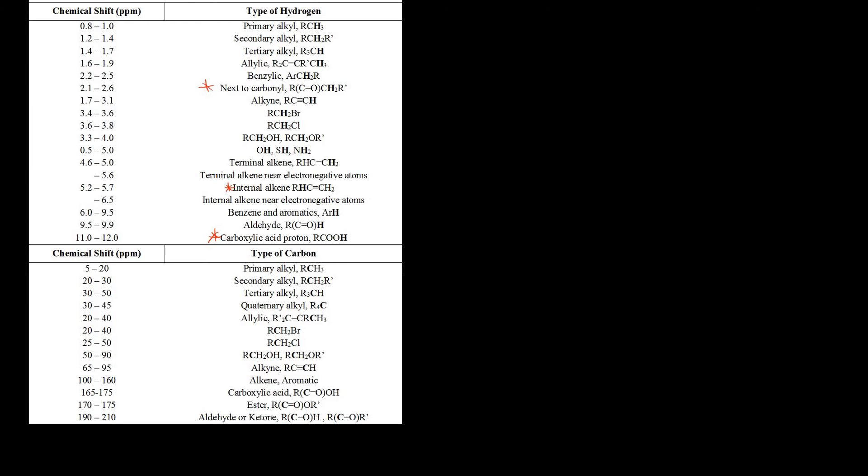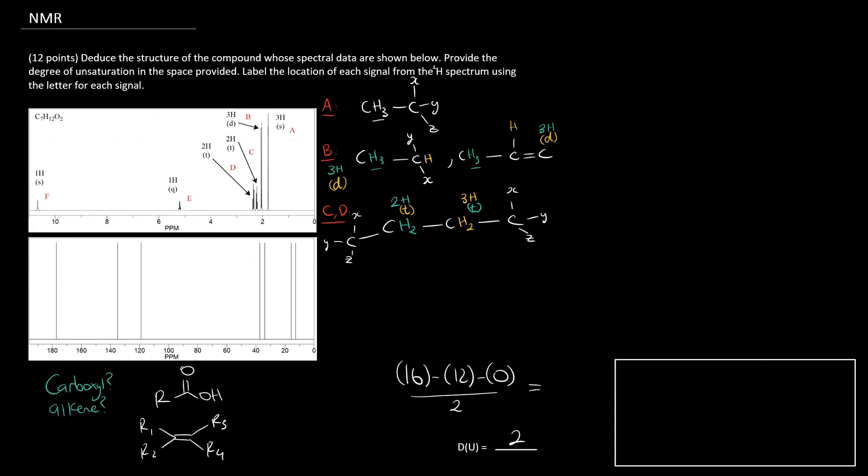It's very likely we have protons that are adjacent to a carbonyl, as well as protons that are adjacent to an alkene. Anything adjacent to a carbonyl, which is part of the carboxylic acid, will also be around 2.1 to 2.6, but that could vary. The allylic protons are between 1.6 and 1.9, and that satisfies this 3H singlet. So I have a methyl group substituted on an alkene.